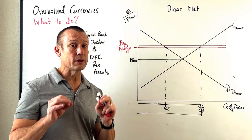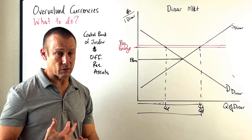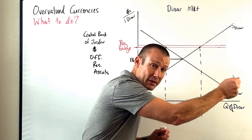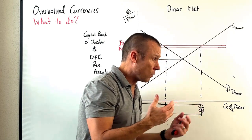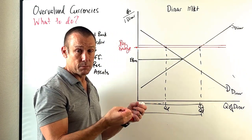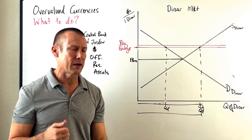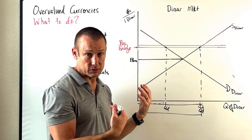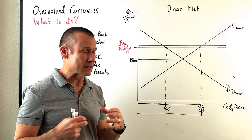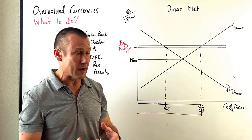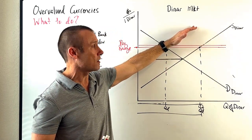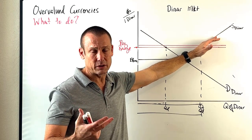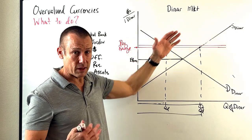They can also do import controls — tariffs and quotas. If they put tariffs on imported goods, those goods become more expensive for Jordanians, so they'll buy fewer imports. People in Jordan who wanted to go buy stuff from abroad and supply their dinar to do so will do less of that. That decreases the supply of dinar — import controls, essentially tariffs, pull back that supply curve.